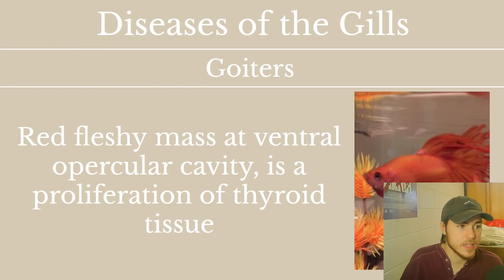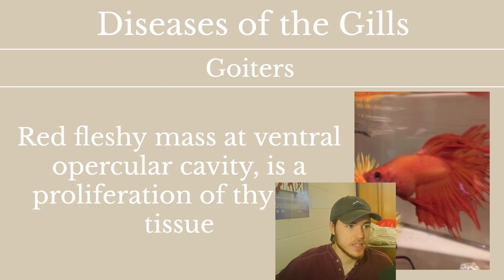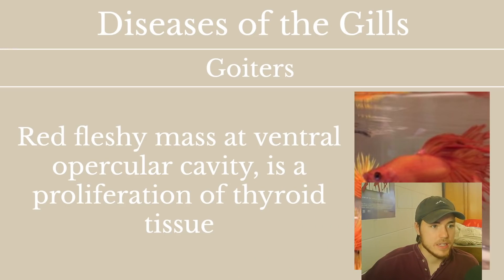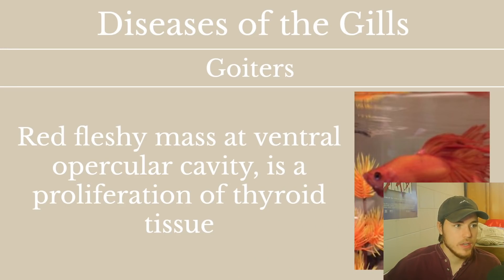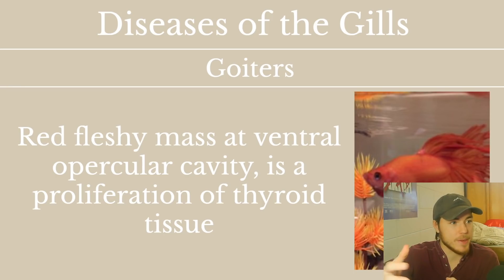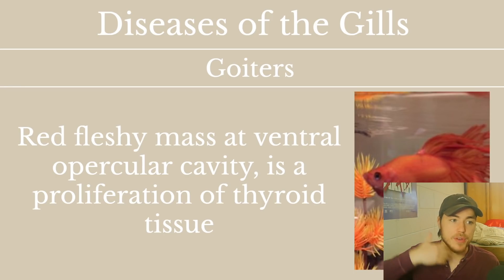Goiters on the gills can be seen on fish like this betta fish, where a little red fleshy mass pops out under the gill. That's called a goiter — it is thyroid tissue proliferating, meaning thyroid tissue growing too far, at the front of the opercular cavity, the entrance to the gills.